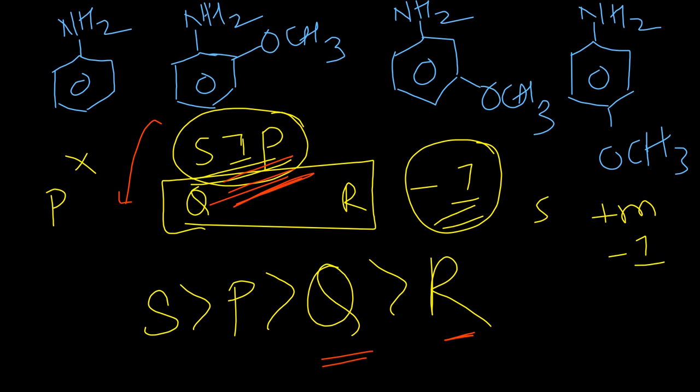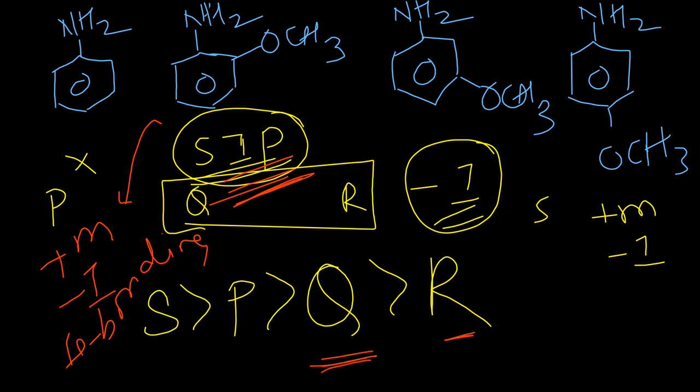This exception in methoxy aniline should be remembered: even with SIP, ortho-methoxy aniline (Q) ranks before tolidine because plus M, minus I, and hydrogen bonding contribute together. In fact, the basic strength of aniline and methoxy aniline are almost the same - ranging from 9.98 to 10.02. This is experimental data and such questions are generally not asked in exams.